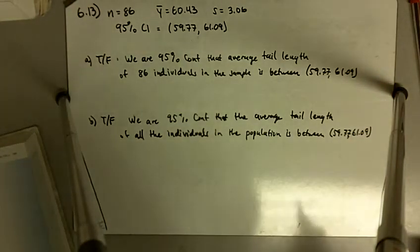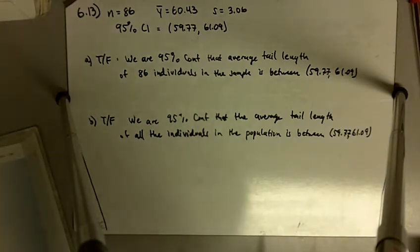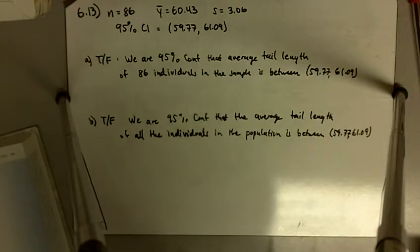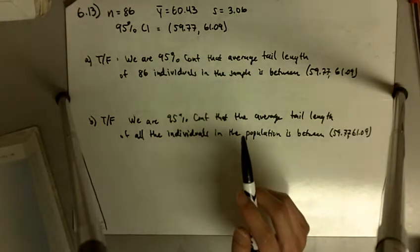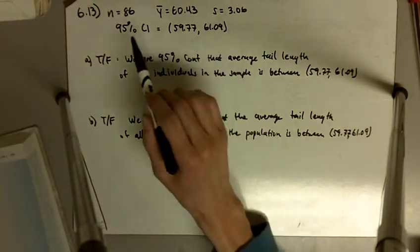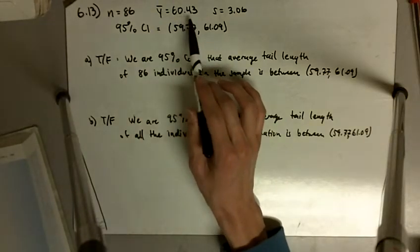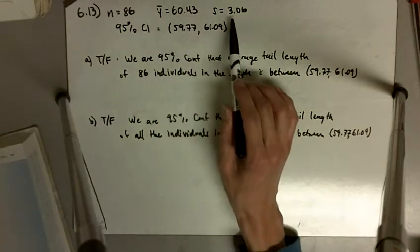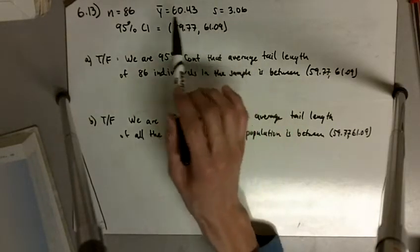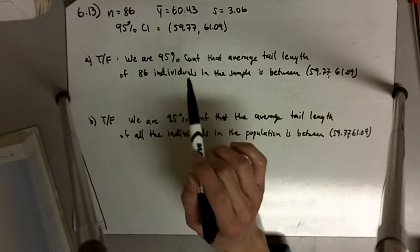Problem 6.13 says a zoologist measured tail lengths in 86 individuals, all in the one-year age group of the deer mouse. The mean length was 60.43 millimeters and the standard deviation was 3.06. So we've got 86 mice measured, 60.43 was the mean of the 86 mice, and 3.06 was the standard deviation of the 86 mice.